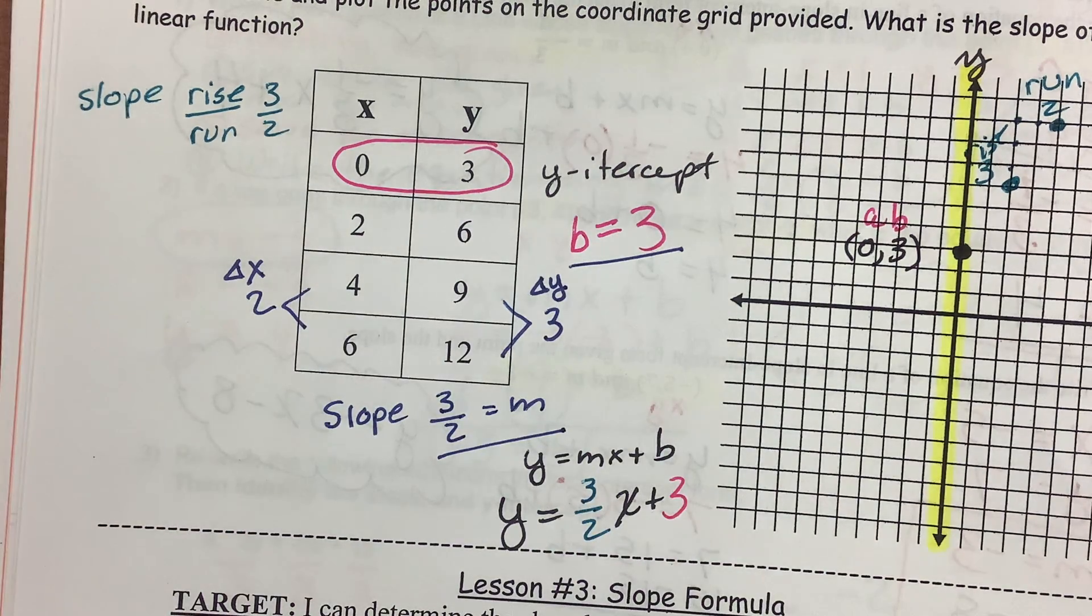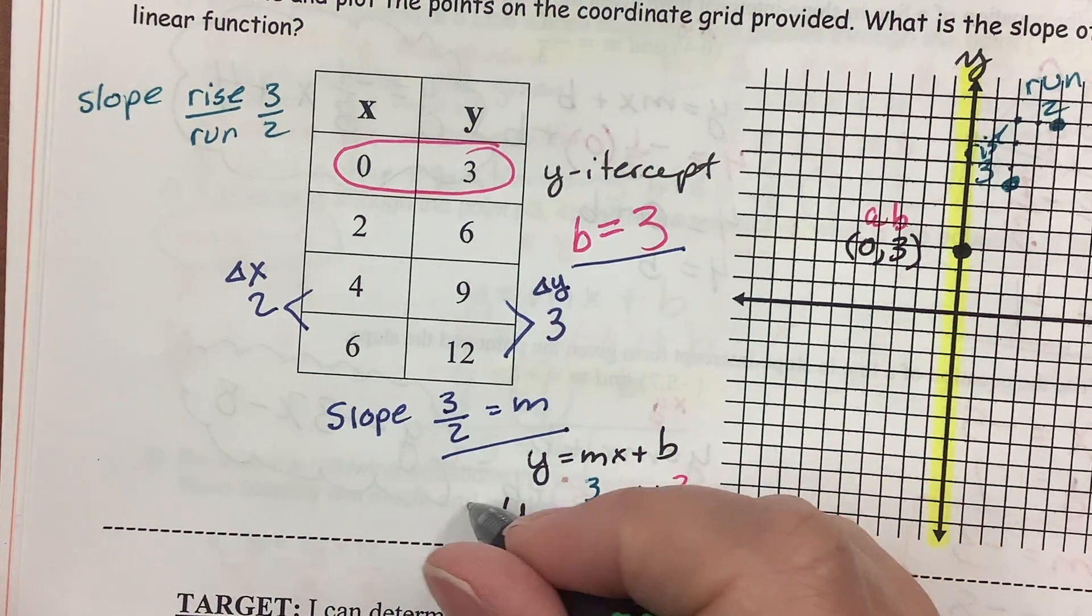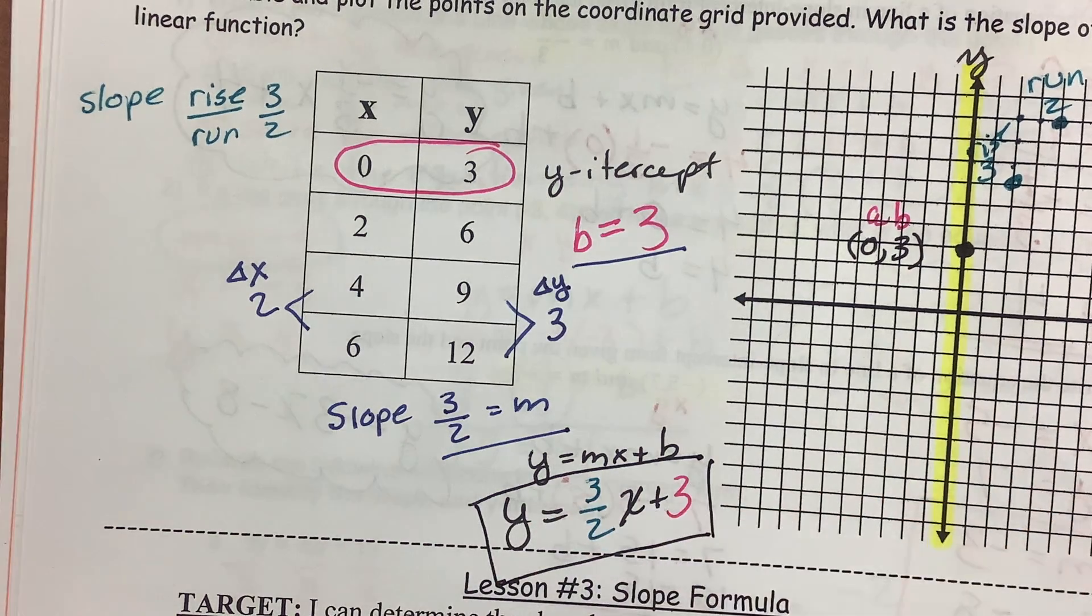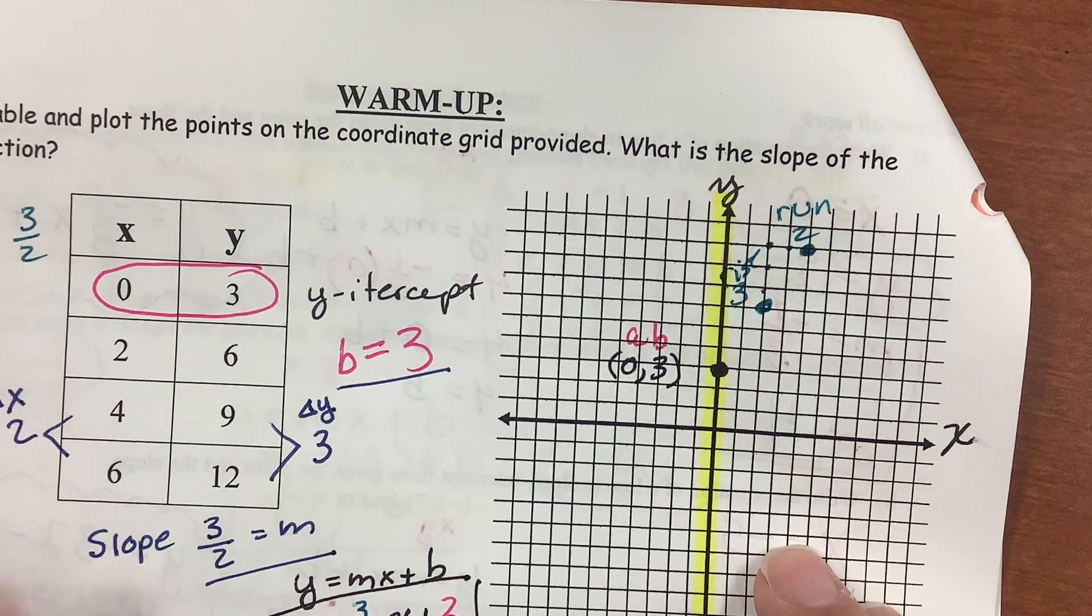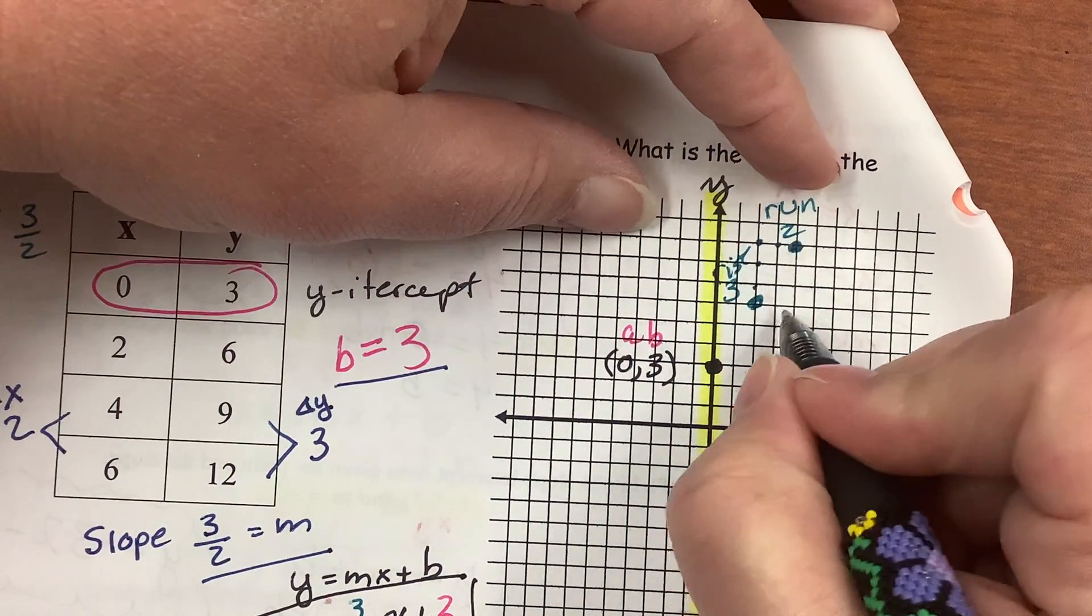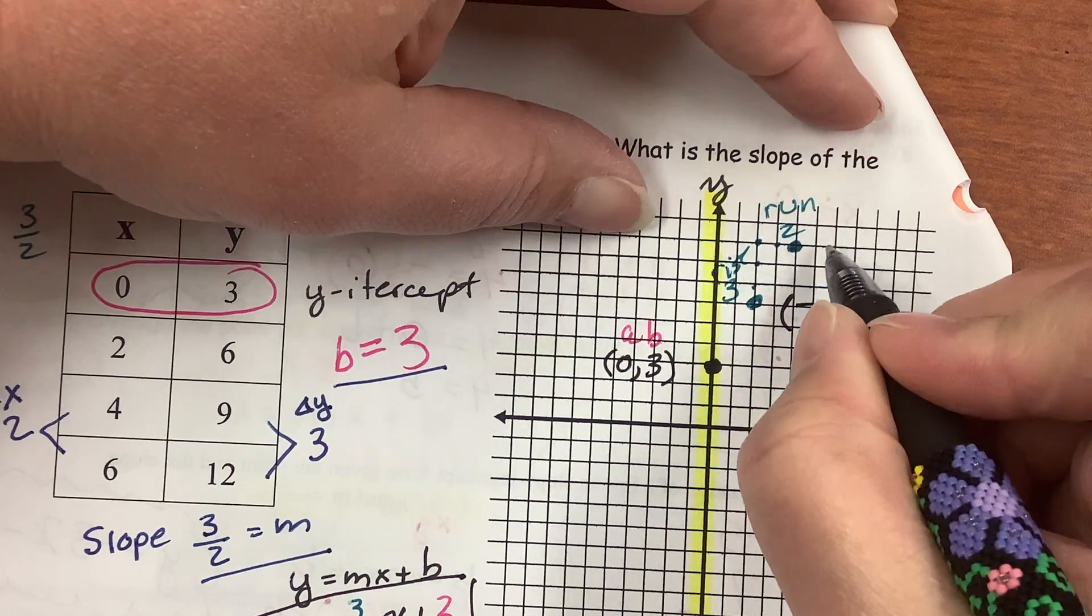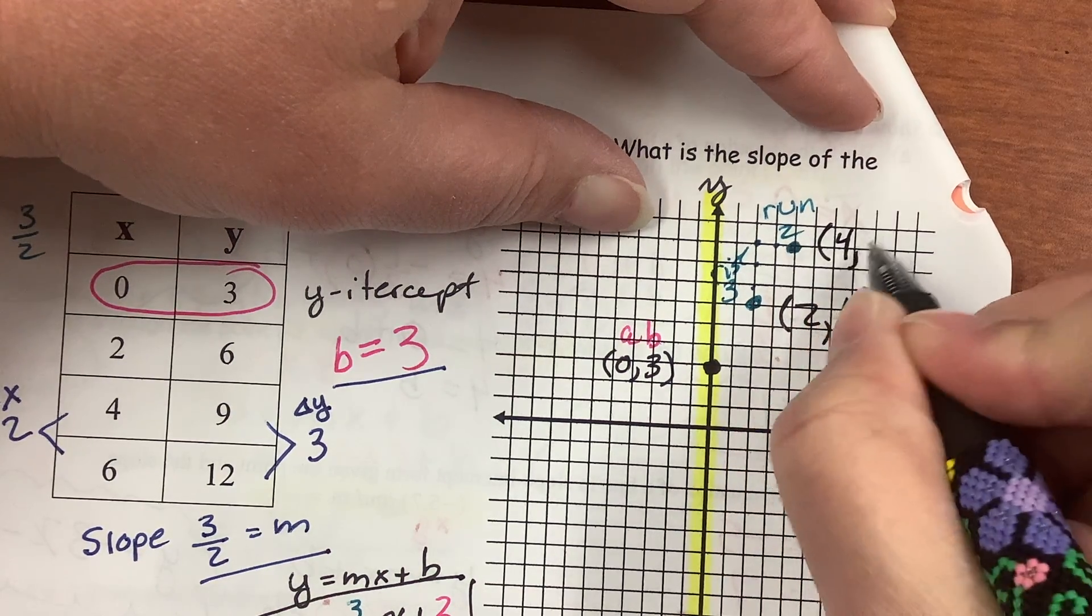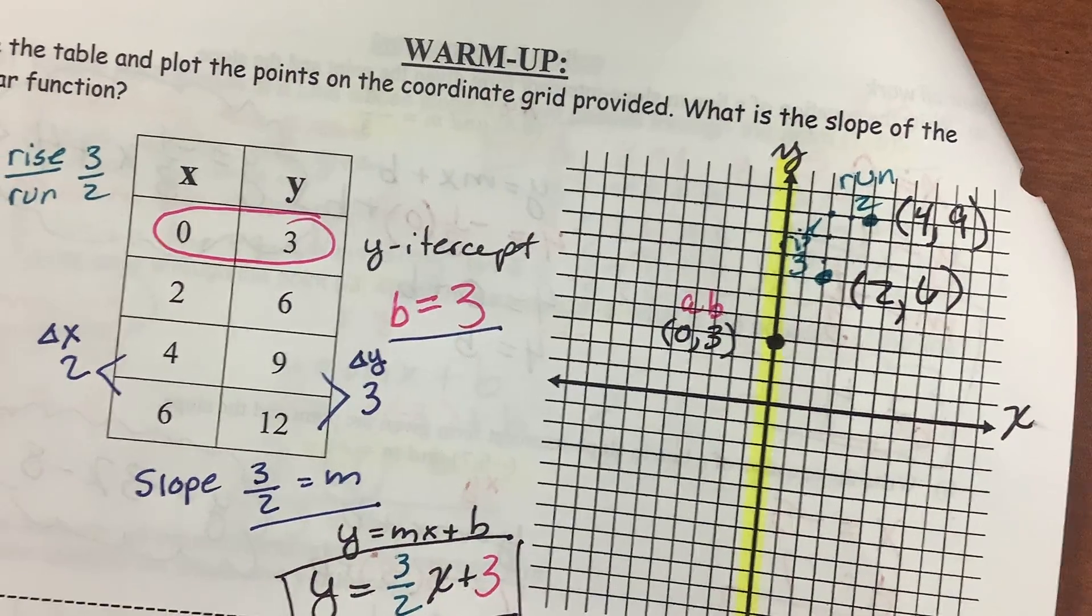That was the question. Oh, it didn't ask me to make a line. It says, what is the slope of the linear function? I found the slope. I did too much work. But I'm going to label these points because it says put the points on the grid. So, that was 2, 6. And this is 4, 9. And I can't do 6, 12 because it just doesn't go up enough.